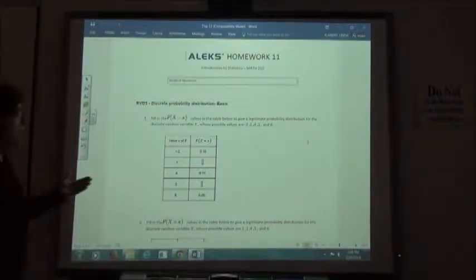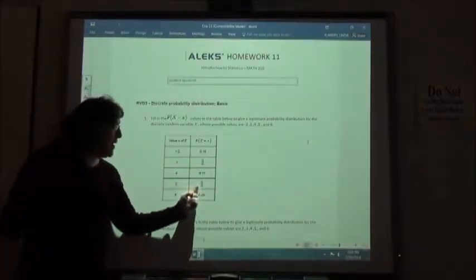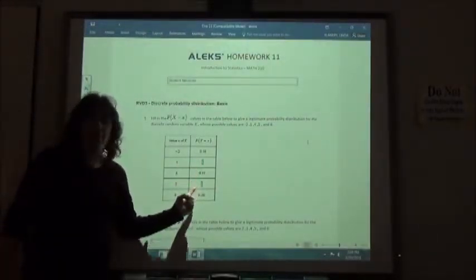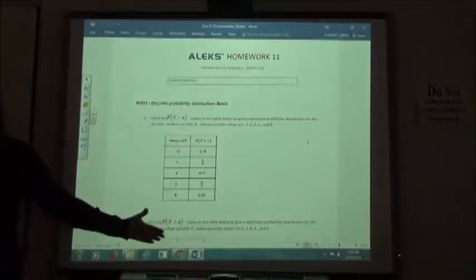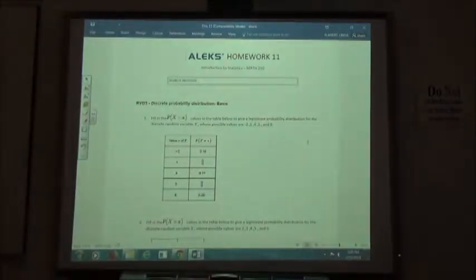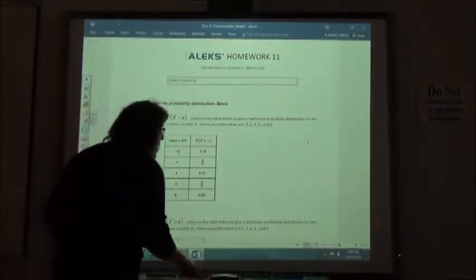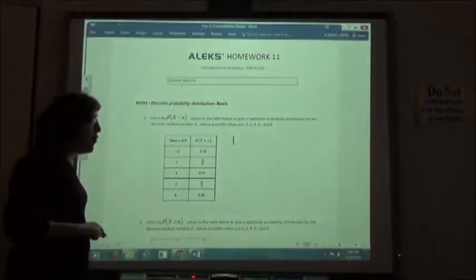So what they want you to do is fill in two possible answers that you could put in for these values so that everything would add up to 1. So first thing you're going to do is just go ahead and take 1 and subtract off the ones that you know.